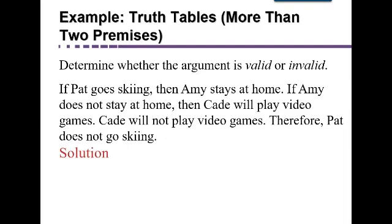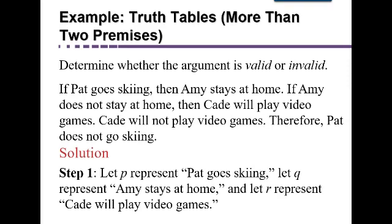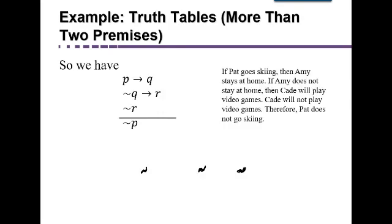In order to make it simpler, we change it to symbols. We're going to let P represent 'Pat goes skiing,' Q will represent 'Amy stays at home,' and R will represent 'Cade will play video games.' All other statements can be written as negations of one of those or some kind of connective. So here was the statement: If Pat goes skiing (P), then Amy stays at home (Q). If Amy does not stay at home (not Q), then Cade will play video games (R). Cade will not play video games (not R). Therefore, Pat does not go skiing. Hopefully everybody can see how we got this argument translated into symbols.